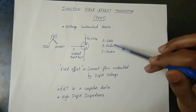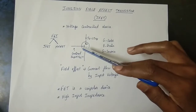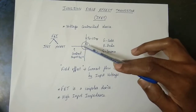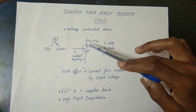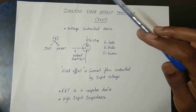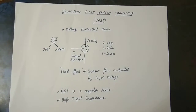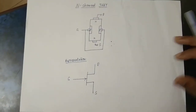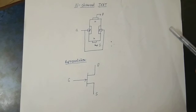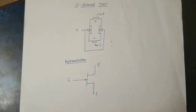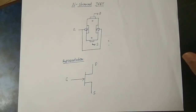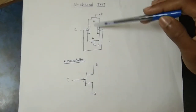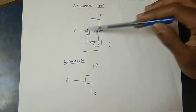The output voltage is VDS and the output current is ID. This is the basic idea of JFET. There are two types of JFET: N-Channel JFET and P-Channel JFET. In the N-Channel JFET, the main channel is an N-type layer with P-type layers on either side.